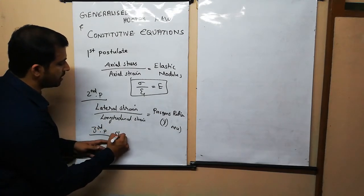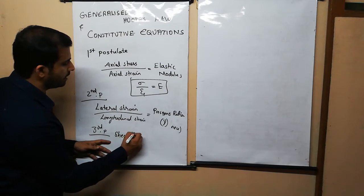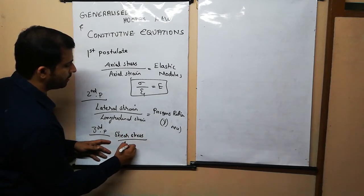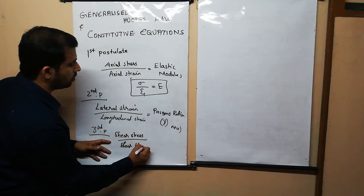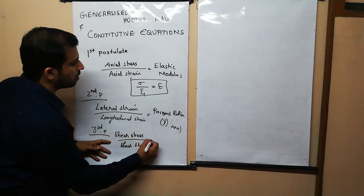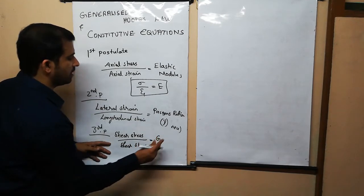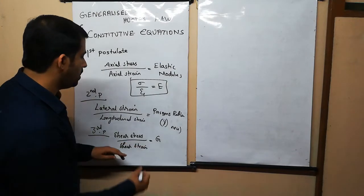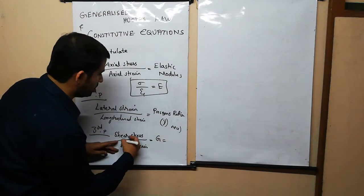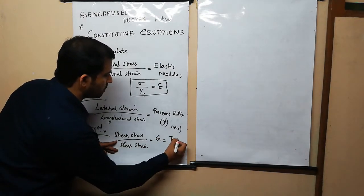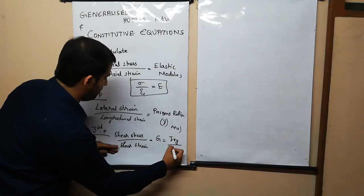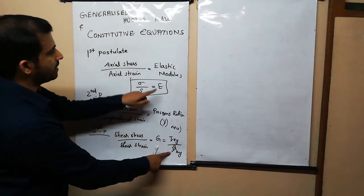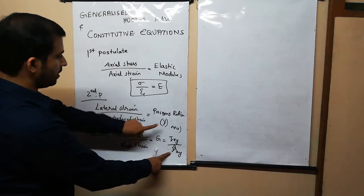The third postulate: shear stress divided by shear strain is equal to the modulus of rigidity, capital G. We can write tau_xy divided by gamma_xy equals G. G is known as the modulus of rigidity.